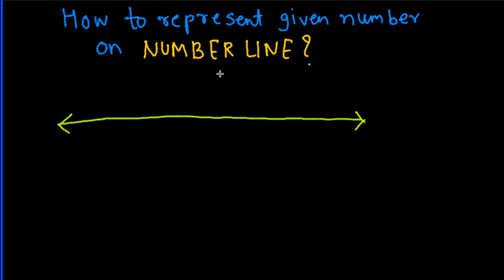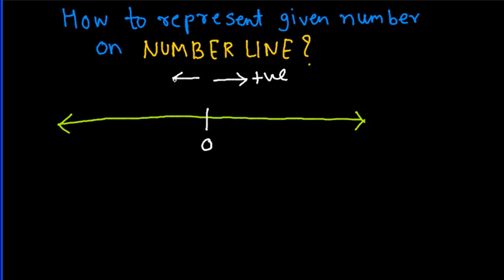On a number line, you can represent any number — be it a fraction, an integer, a whole number, or even a rational number. Usually the center is represented by zero. Zero is the point which divides the positive part and the negative part. As we move to the right of zero, numbers are positive and keep increasing. As we move to the left, numbers are negative and keep decreasing.